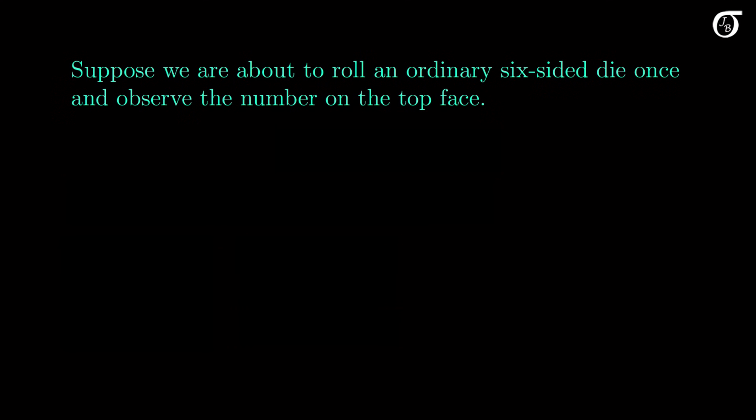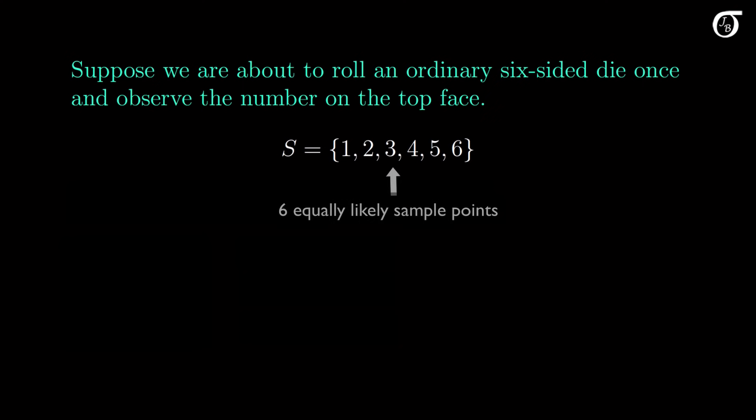Let's work through a simple example to illustrate some of these concepts. Suppose we are about to roll an ordinary six-sided die once and observe the number on the top face. Here's a natural way to define the sample space — the set of the six possible outcomes. If it's an ordinary die and we're rolling it fairly, then it's reasonable to think these six sample points are equally likely, though that won't be perfectly true in practice.